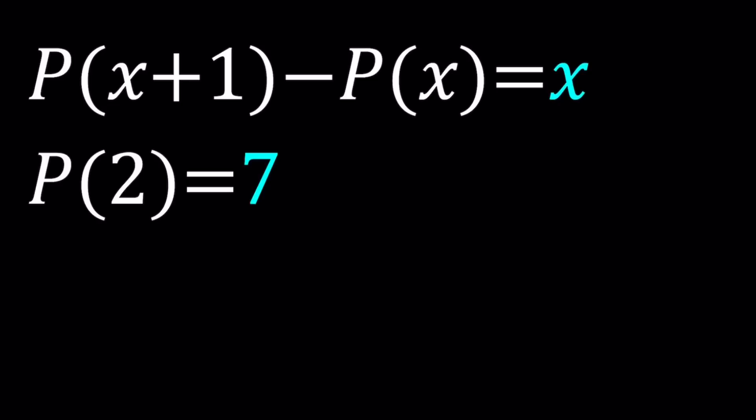So what kind of polynomial are we looking at if their difference is x? Think about it this way. If P of x is constant, then P of x plus 1 is also going to be constant, and the difference of the same numbers will be 0. There's no way you can get an x. If P of x is linear, like P of x equals 3x, then P of x plus 1 is just going to be 3x plus 3. You're going to replace x with x plus 1, and then their difference is going to be a constant, not x.